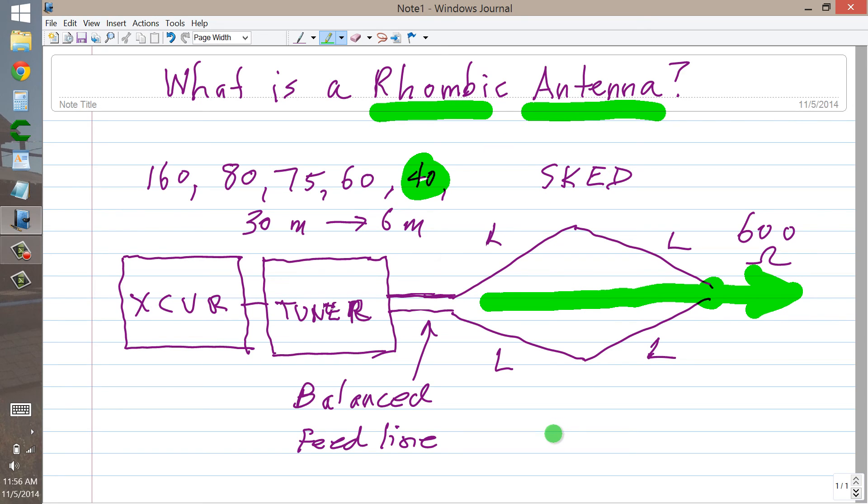And believe it or not, people still use these things. When I worked at the ARRL headquarters station W1AW in Newington, Connecticut in 1977 and 1978, they had one of these antennas as a backup. And they could use it on any of these bands if one of the other main antennas happened to go out of commission for a while and it was aimed at San Francisco, California,